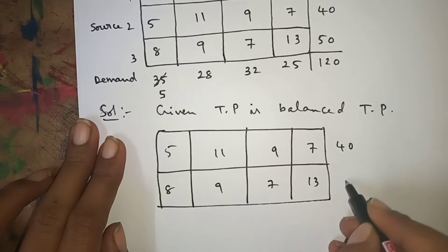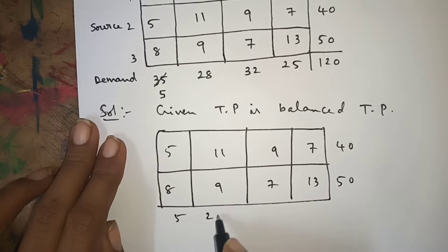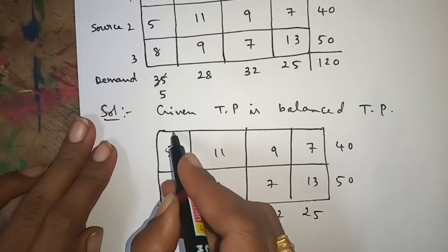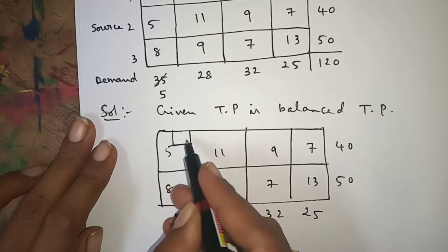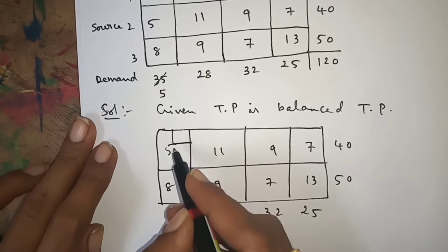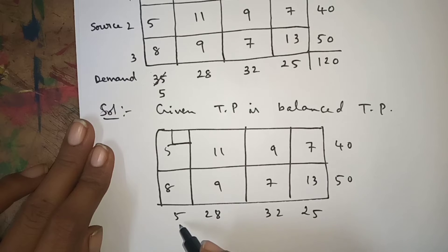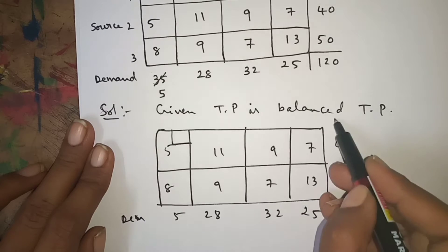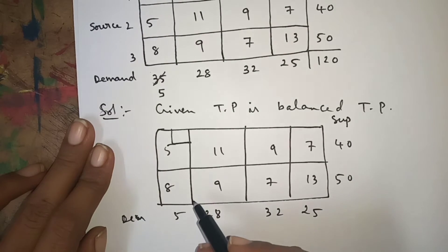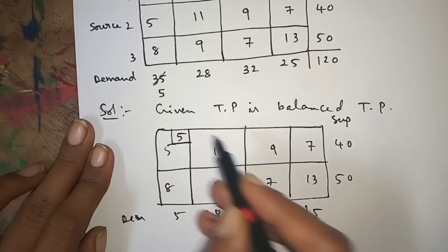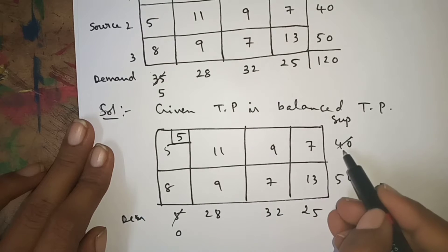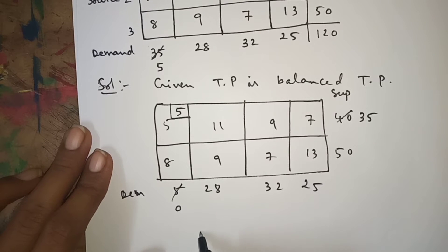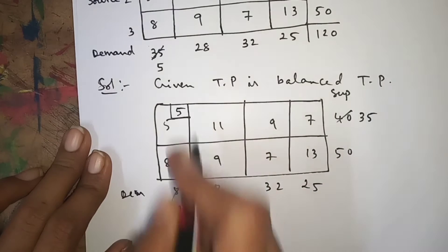Now the updated demand is 5, 28, 32, 25 and supply is 40 and 50. According to this block, this is the northwest corner — go to the northwest corner cell and put one box. The supply is 40 and the demand is 5. Out of 40 and 5, the minimum is 5. We use 5, cancel it to 0, remaining supply is 35. Wherever zero appears, omit that column — so I am omitting the first column.